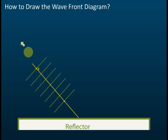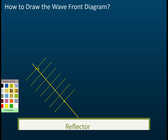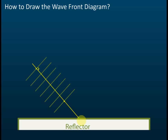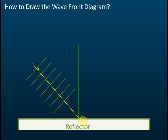After you get the points of reflection, draw the normal. The normal is a line which is 90 degrees to the reflector. Use a different color for the normal to distinguish it.